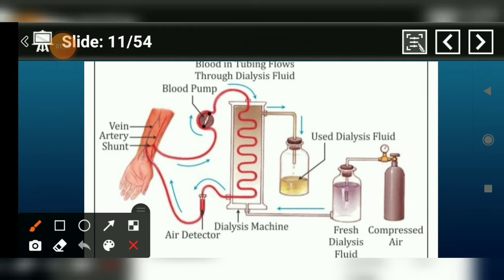There is filtration of blood in the nephron. For a person whose kidney has failed, there is an artificial machine which we call hemodialysis machine. Through this machine, there is purification of blood.